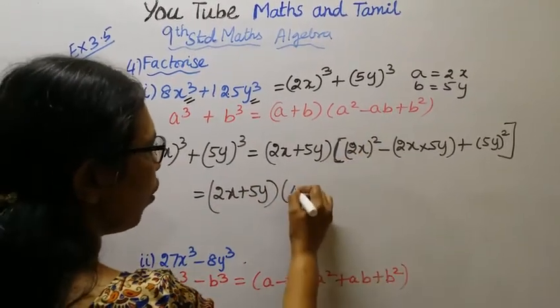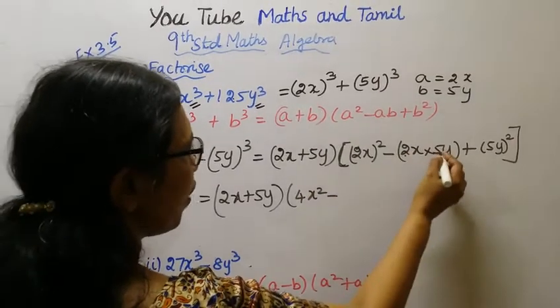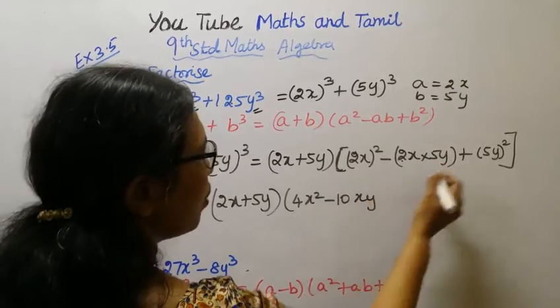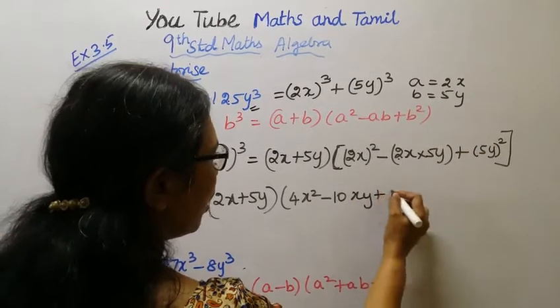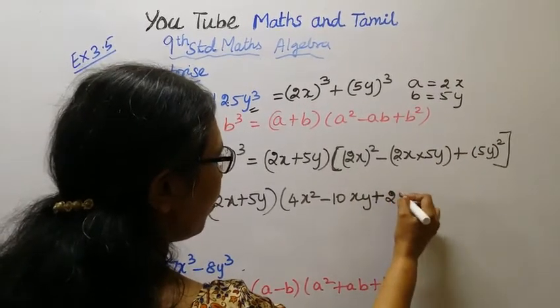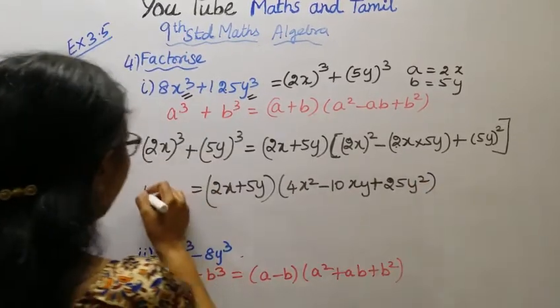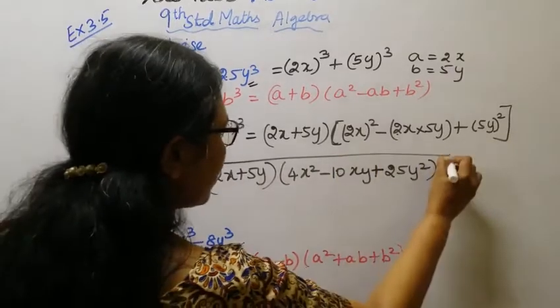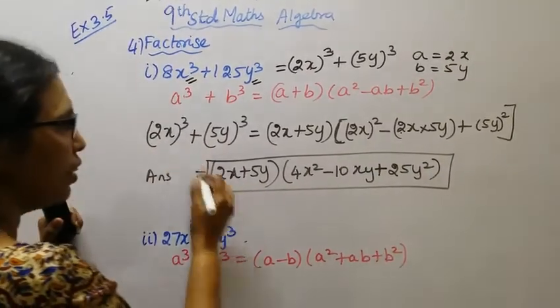2²=4, x² minus 2×5=10xy plus 5²=25y². Answer: (2x + 5y)(4x² - 10xy + 25y²). This is the first subdivision answer.